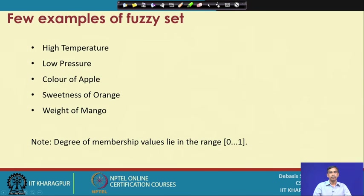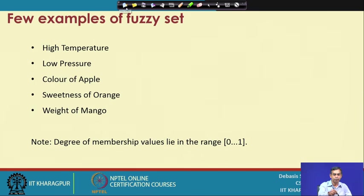Some further examples can be used: temperature is high — this can be discussed in a fuzzy form. Similarly, low pressure, colour of apple, sweetness of orange, weight of mango, and so on — these are few examples of inputs that can also be discussed in a fuzzy form.